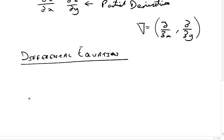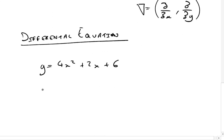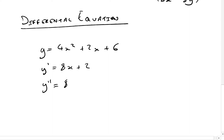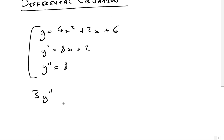Let me go back to the example of an equation we're fairly used to. So y equals 4x squared plus 2x plus 6. This is an example of an equation because we've got y in terms of x. But all a differential equation is, is an equation which involves its derivatives as well. So if we differentiate this, we get y dash - dy/dx - equals 8x plus 2. And then we can also have y double dash, which is going to be equal to 8. Anything beyond that just goes to 0. So we can have two derivatives from this function.